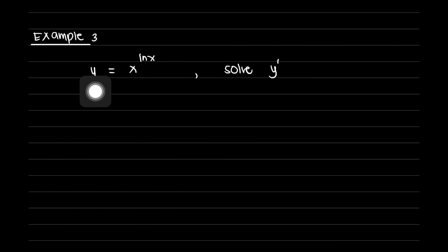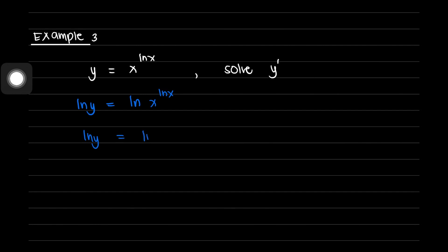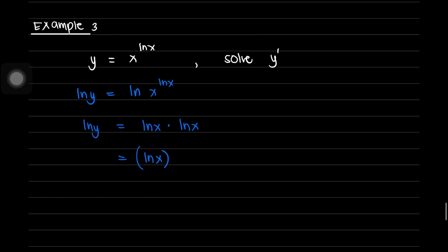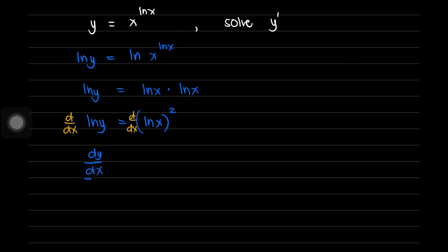For our third example, we are given y equals x raised to ln of x, and we're going to solve for y prime. Taking the natural logarithm on both sides: ln of y equals ln of x raised to ln of x. Applying the property of logarithm, this is ln of y equals ln of x times ln of x, which equals (ln of x) squared. Taking the derivative with respect to x of both sides, the right side is in the form u raised to n, so we apply the power formula. This gives dy/dx all over y equals 2 ln of x times the derivative of ln of x.